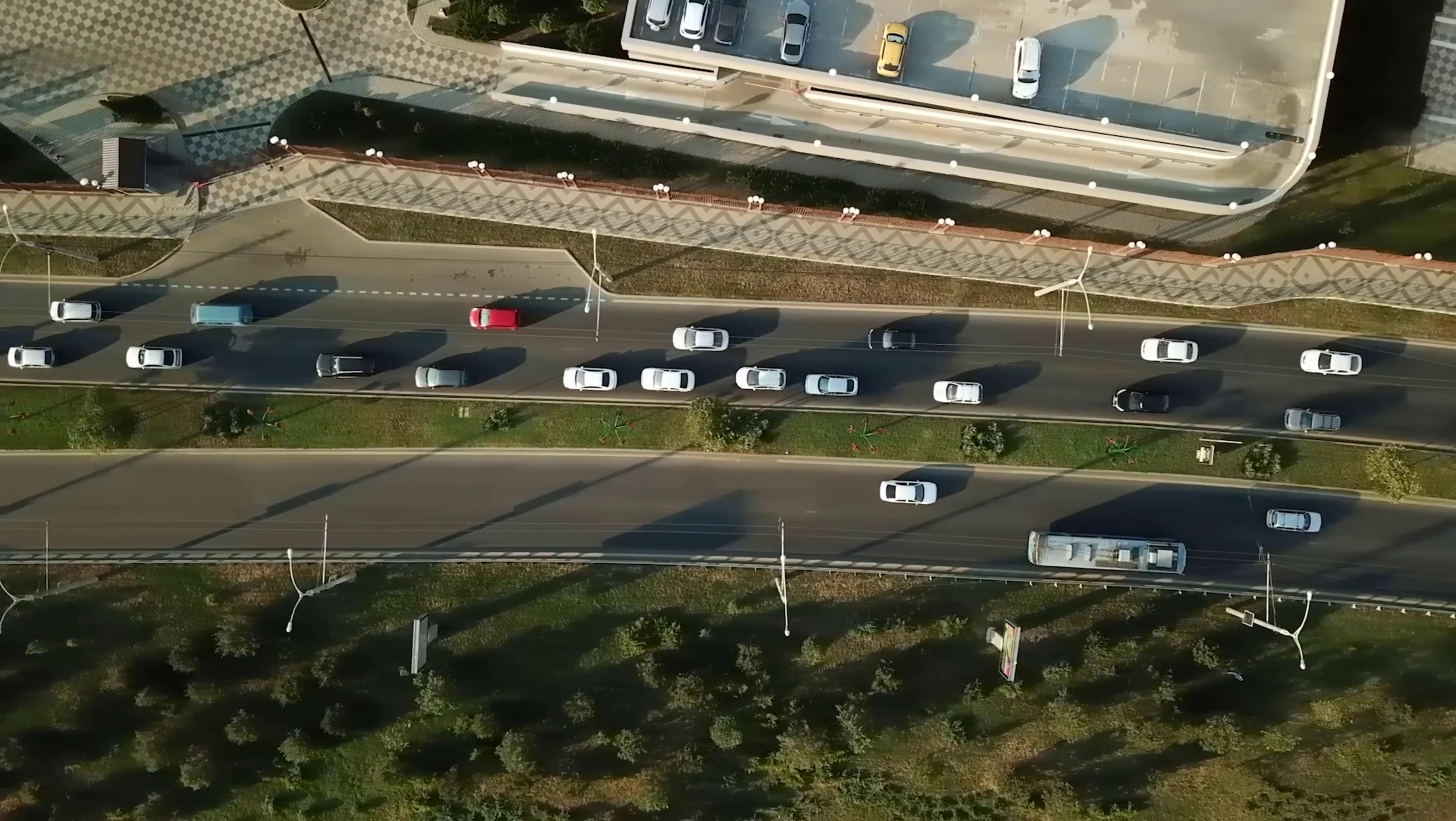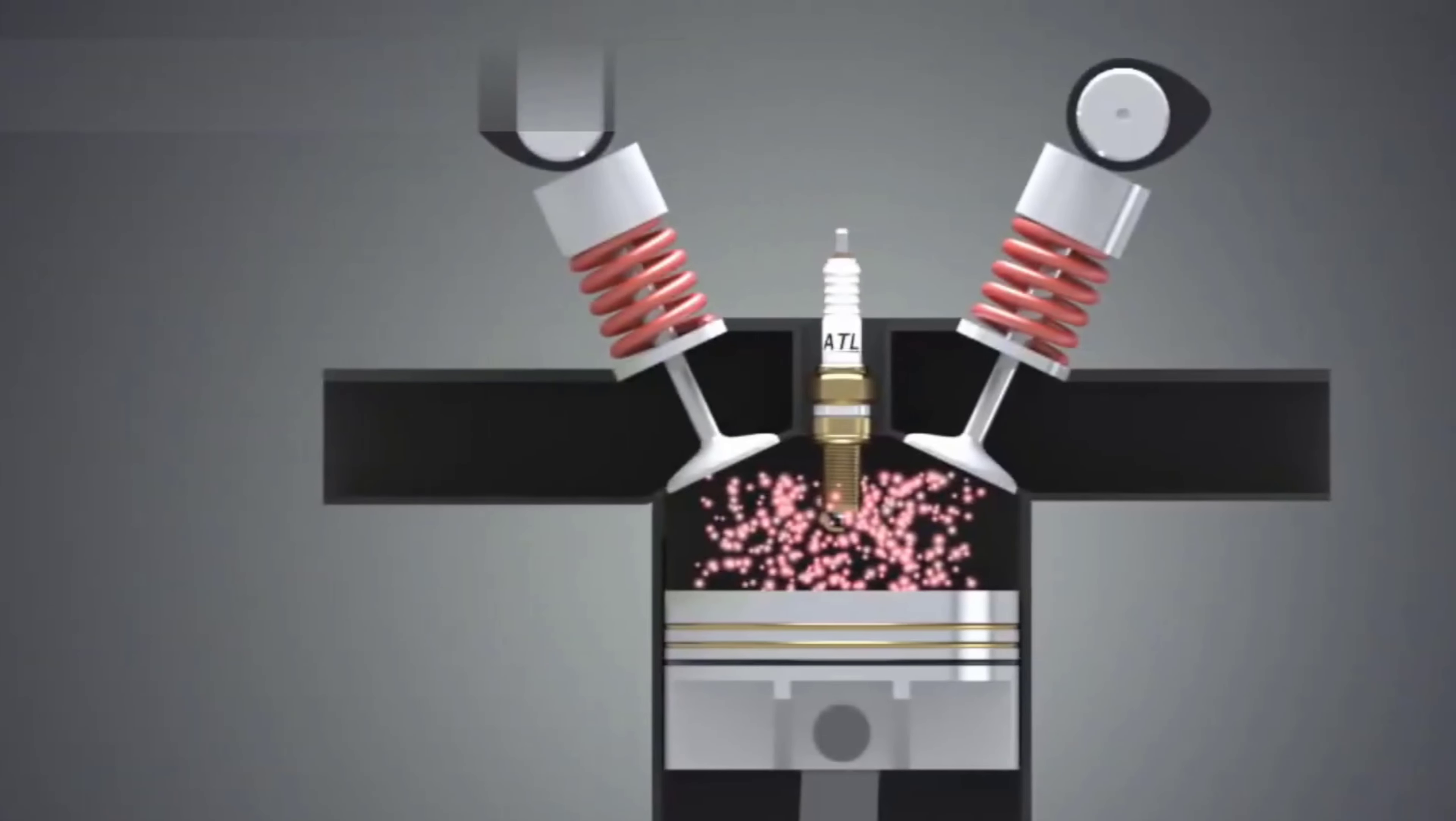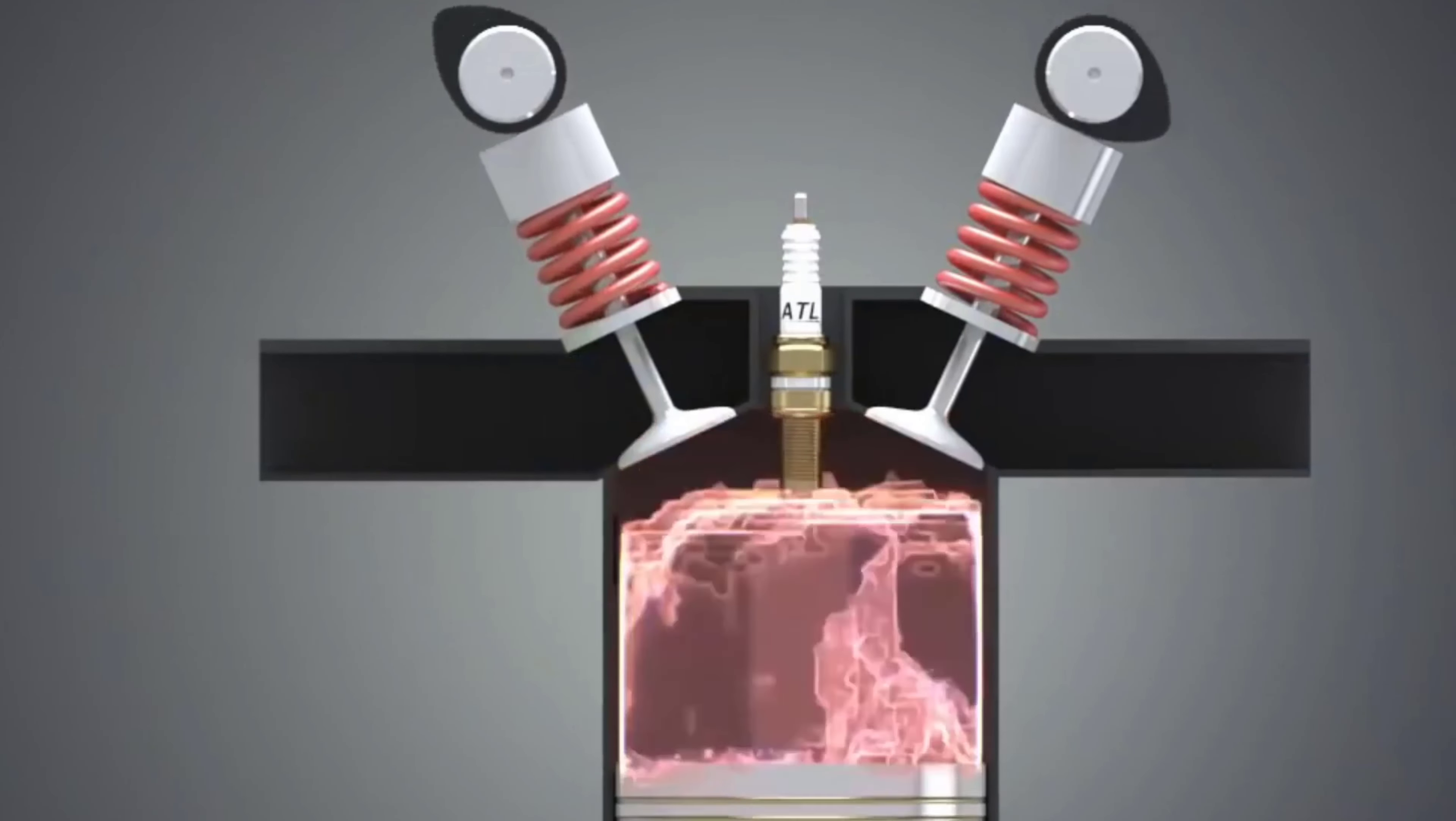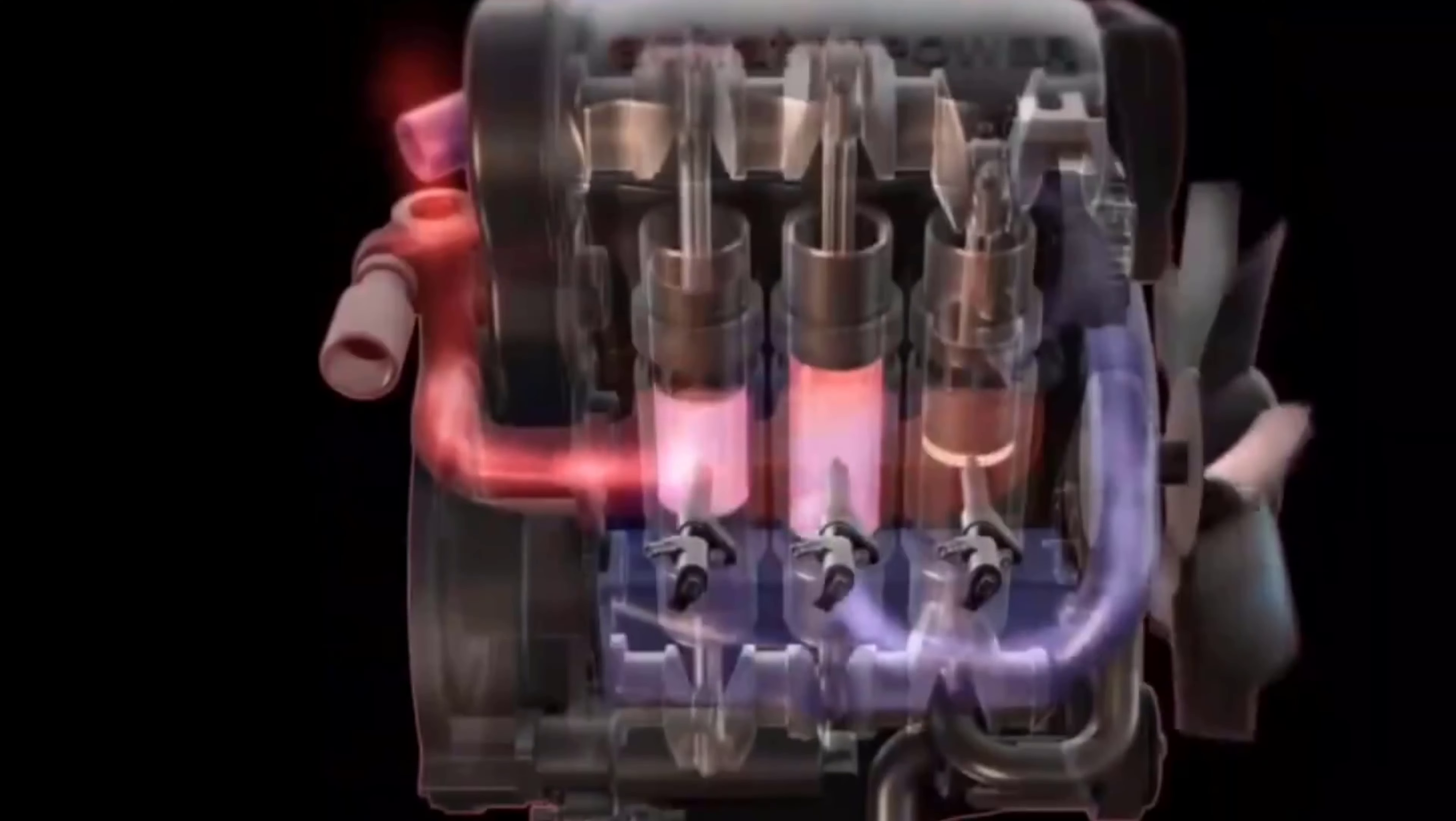The simplified explanation of how a hydrogen combustion engine works starts with air intake. Like any internal combustion engine, it draws in air through an intake valve. Next, hydrogen gas is injected into the intake air stream. The hydrogen can be stored in onboard tanks or generated on demand using a hydrogen fuel cell system. This mixture of hydrogen and air is highly combustible and is compressed by the engine's piston as it moves upward in the cylinder, increasing the temperature and pressure of the mixture.